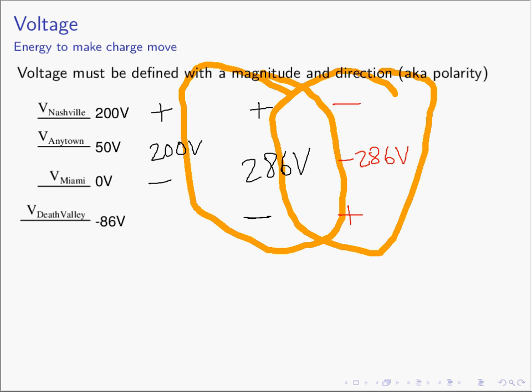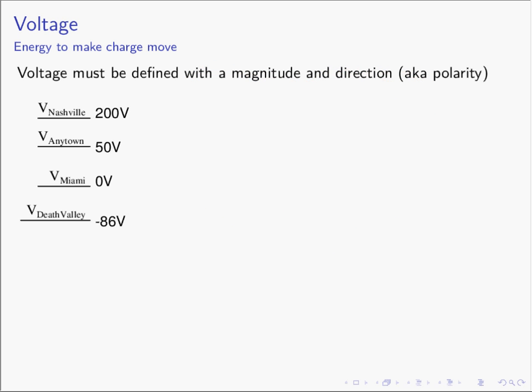So from this we see that voltage is much like a human — there's one voltage but it has two different names. With this example we can talk about how we measure voltages with respect to other voltages. One last thing to point out: in this example we said Miami has a voltage of zero — it is the same voltage as our reference. What is the reference? Well, on Earth we measure sea level as our reference.